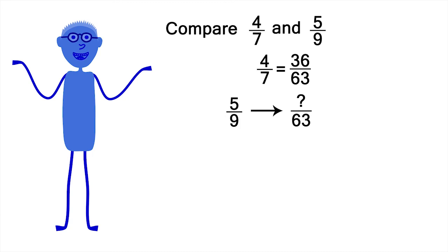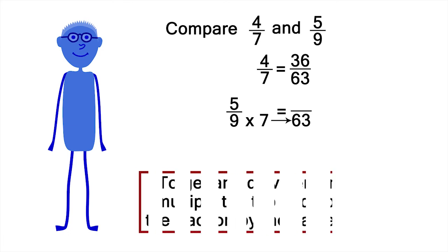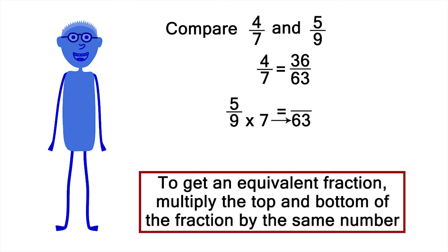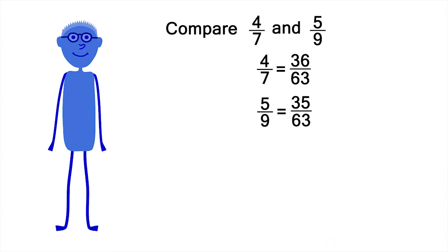Let's convert 5 ninths to an equivalent fraction with sixty-thirds as a denominator, by the same method. What do you have to multiply 9 by to get 63? 7. To get an equivalent fraction, whatever you multiply the bottom half of the fraction by, you also have to multiply the top half of the fraction by. 5 times 7 is 35. So, 5 ninths and 35 sixty-thirds are equivalent fractions.